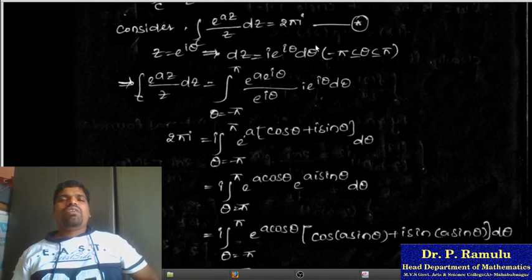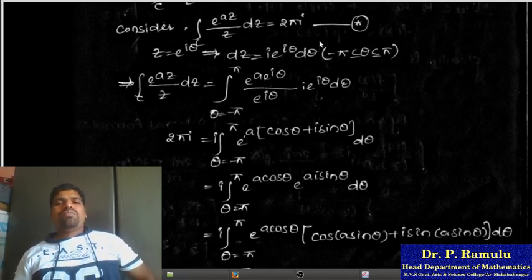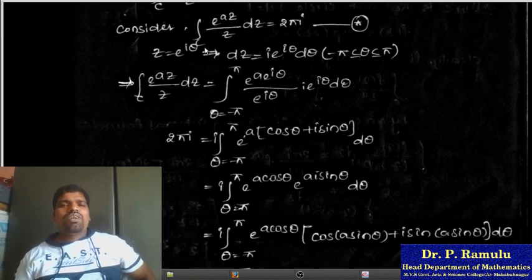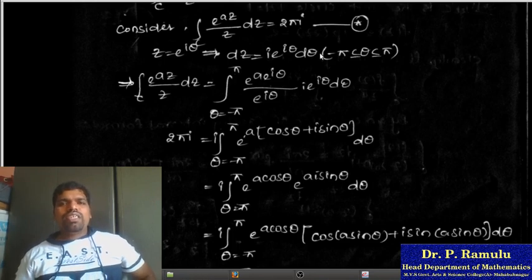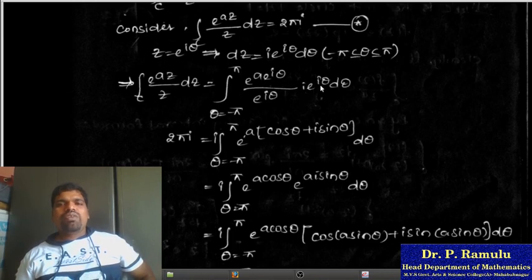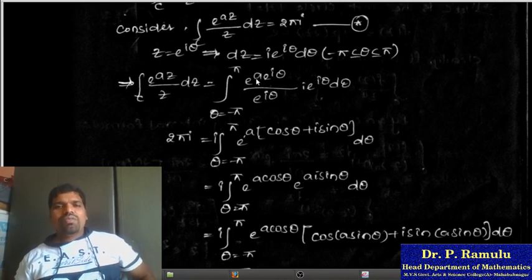Now we want to write this in terms of θ. Let z = e^(iθ), which implies dz = i e^(iθ) dθ, where θ lies between -π and π. The integration over C of e^(az)/z dz equals the integral from θ = -π to π of e^(a e^(iθ)) / e^(iθ) × i e^(iθ) dθ. The e^(iθ) terms cancel, leaving i times the integral of e^(a e^(iθ)) dθ.